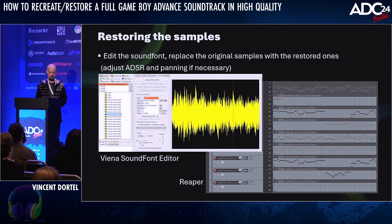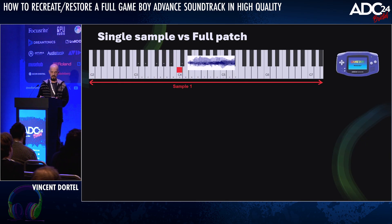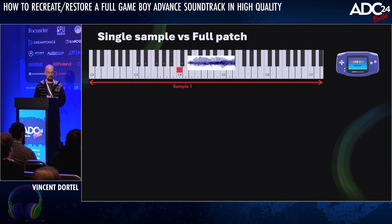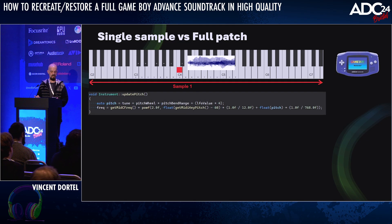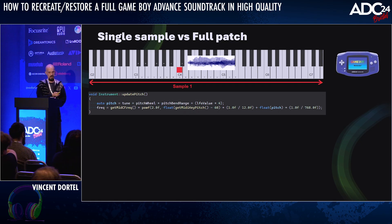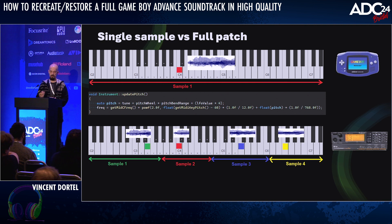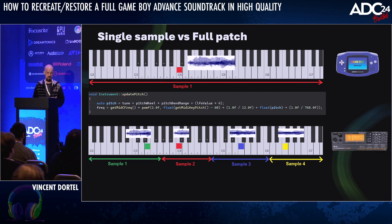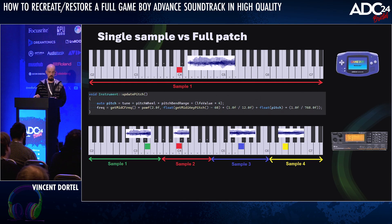Let's talk about single sample versus full patch. In Golden Sun, there's usually one sample per instrument, and each sample is defined by a root note — in this example, C4. When you want to play a note, a function calculates the frequency shift to apply and the sound gets resampled. This is just a basic resampling algorithm; the console was not doing any modern pitch shifting that preserves the duration. On the original hardware, you usually have multiple samples per instrument, but the composer had to pick one sound to record and put in the game because space in the cartridge was limited. Now that we've found the original instrument, what if instead of using one single sample, we use the entire patch?